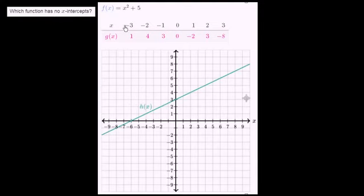So let's see if any of these functions never equal 0. Let's look at this first function right over here. And let me write it right over here. So I have f(x) is equal to x² + 5.